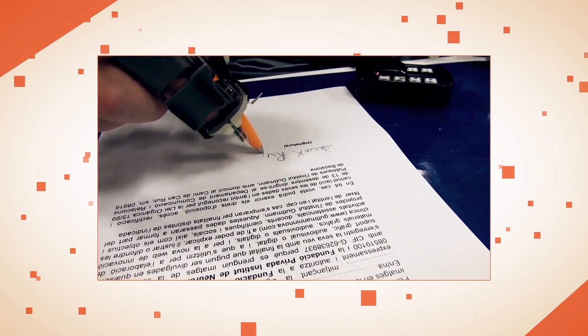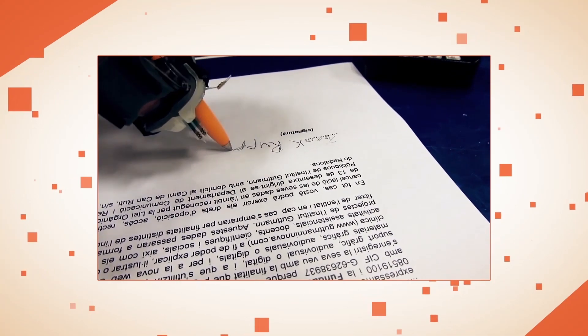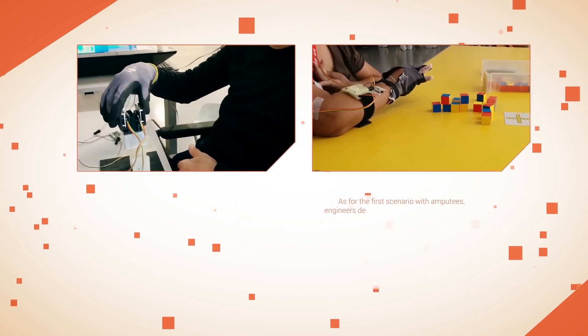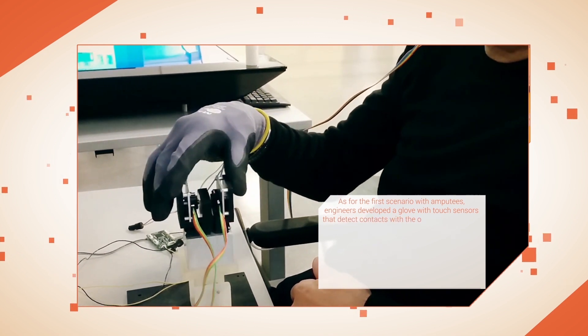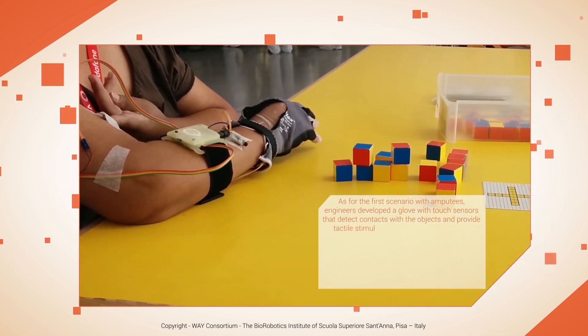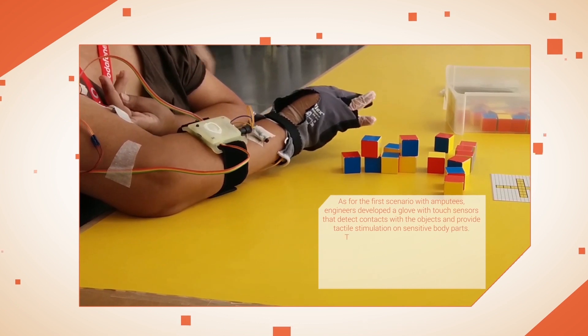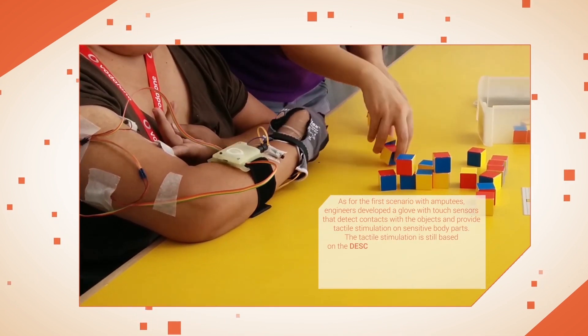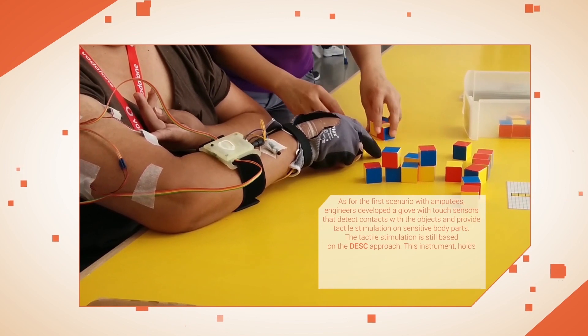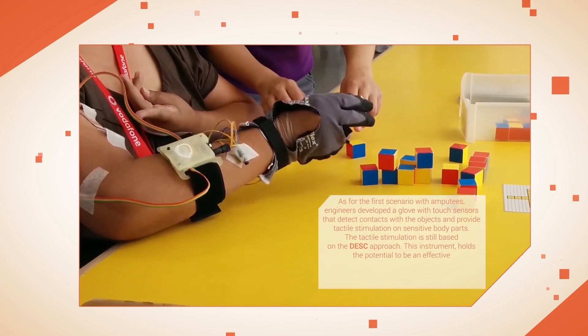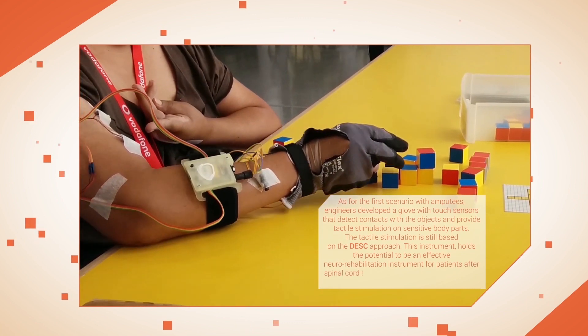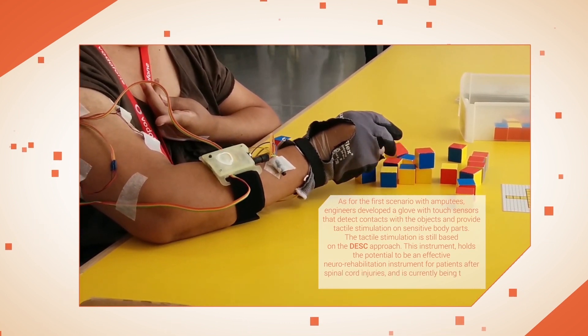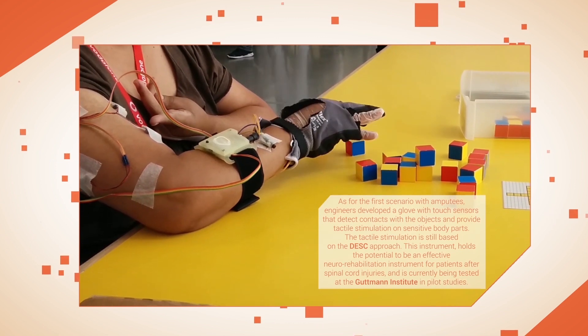The exoskeleton allows Frank to sign with his own hand again. As for the first scenario with amputees, engineers developed a glove with touch sensors that detects contacts with objects and provides tactile stimulation on sensitive body parts. The tactile stimulation is still based on the DESK approach. This instrument holds the potential to be an effective neurorehabilitation instrument for patients after spinal cord injuries and is currently being tested at the Guttmann Institute in pilot studies.